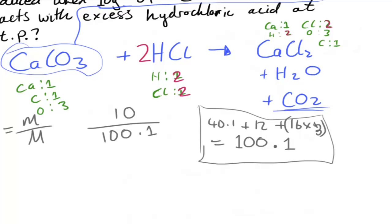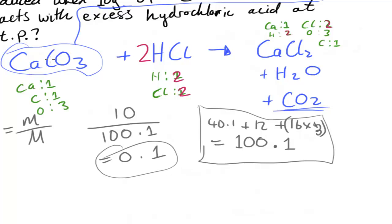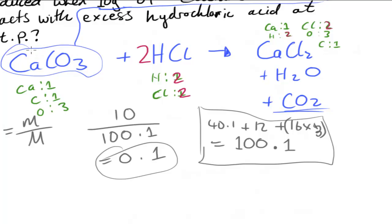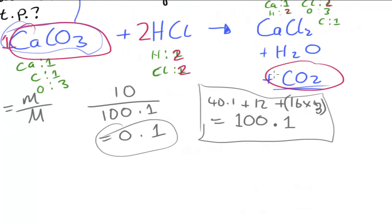Dividing 10 by 100.1, we get approximately 0.1 moles to one significant figure. Now we look at the molar ratio between calcium carbonate and CO₂. From the balanced equation, we can see it's a one-to-one relationship — one mole of CaCO₃ for every one mole of CO₂. So the number of moles of CO₂ is also 0.1 moles.